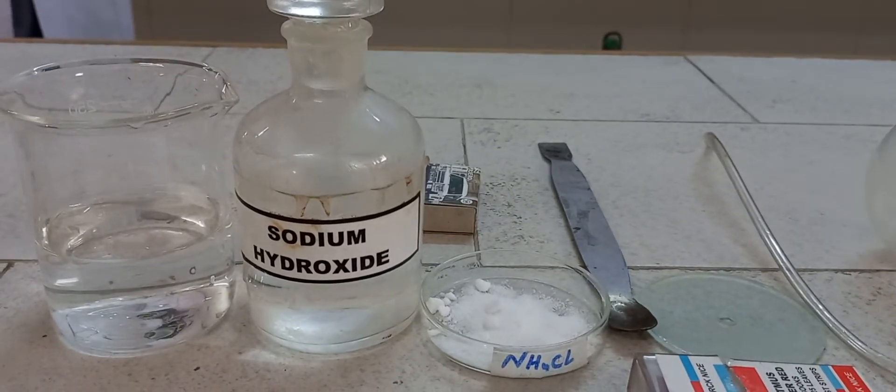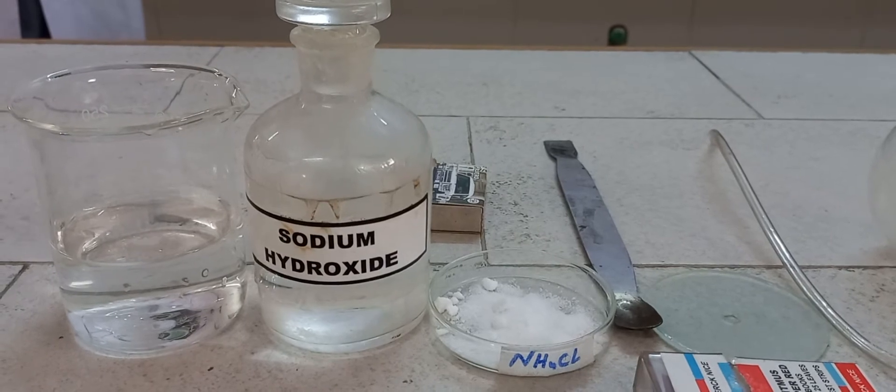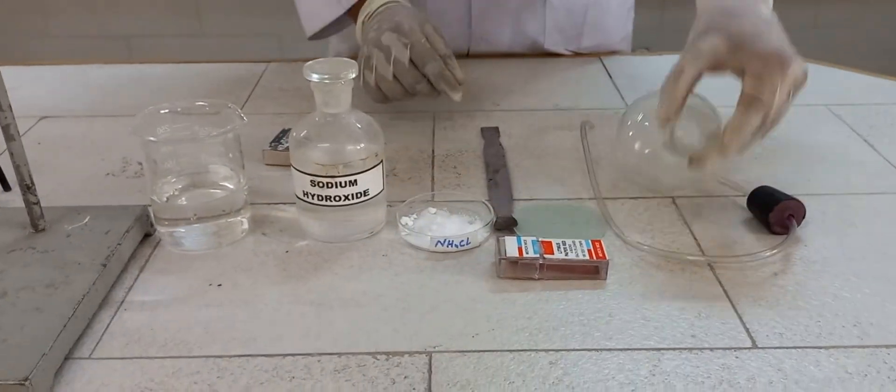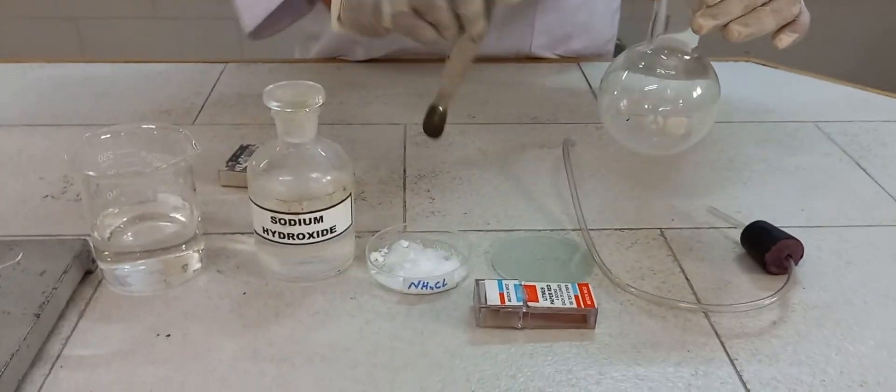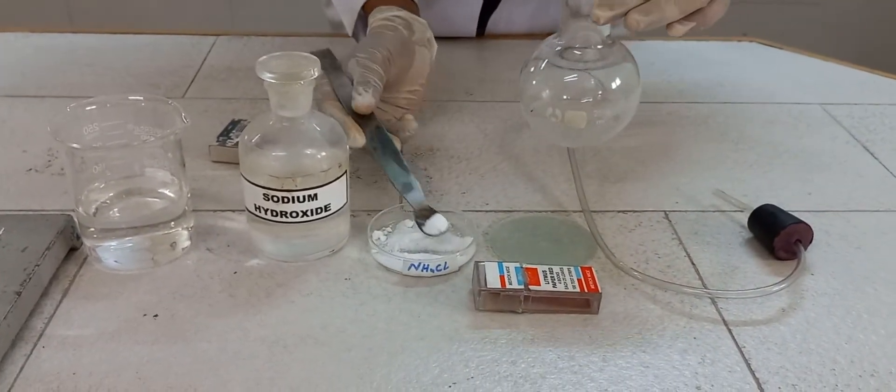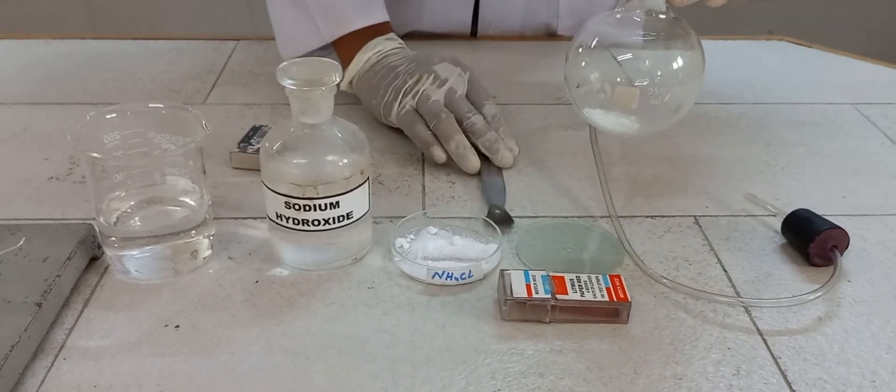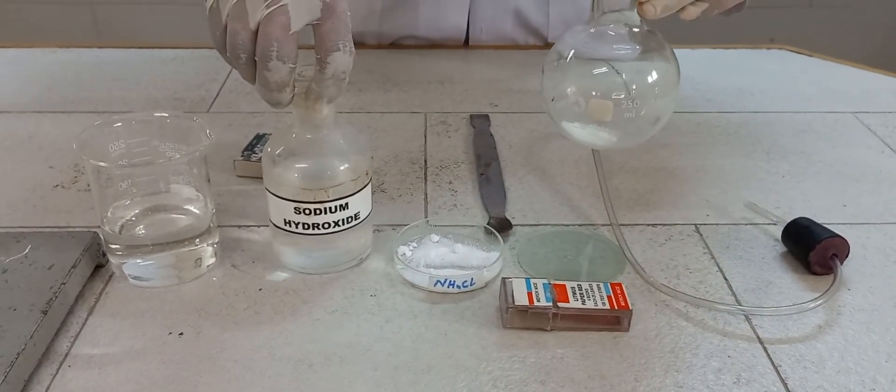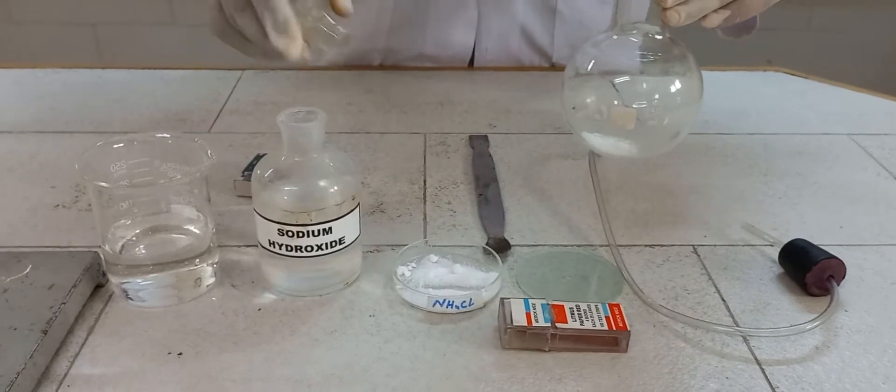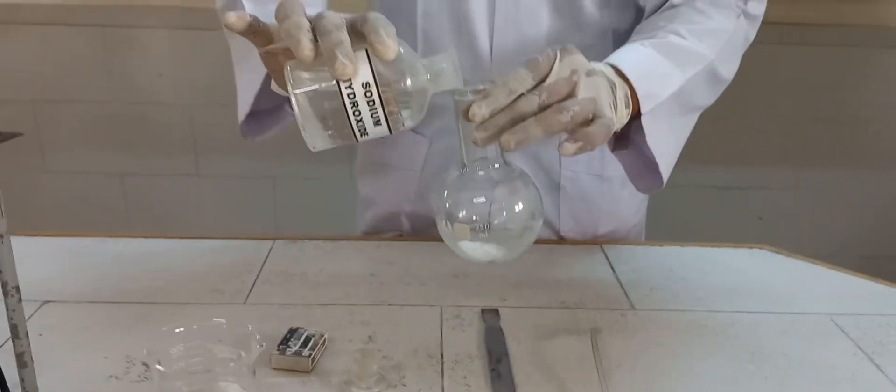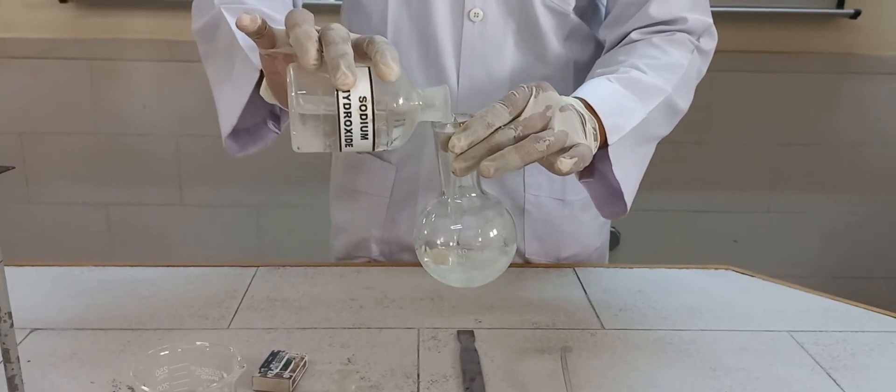Let's start with the experiment. Preparation of ammonia gas: we are taking a little bit of ammonium chloride in a round bottom flask. Why are we taking a round bottom flask? The reason is we have to warm it, and for the uniform heating we always do it in the round bottom flask. We are adding sodium hydroxide to it and the reaction has started.